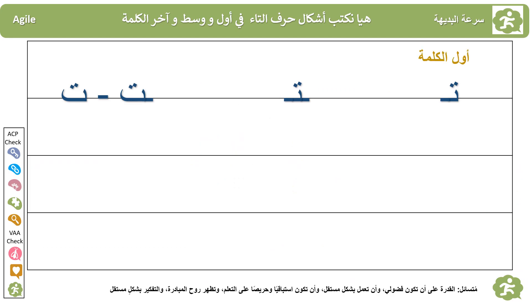This week we also learned the little Taa (ت) and its shapes. Little Taa at the beginning — at the middle — and at the end. At the beginning it has only one hand. At the middle it has two hands.